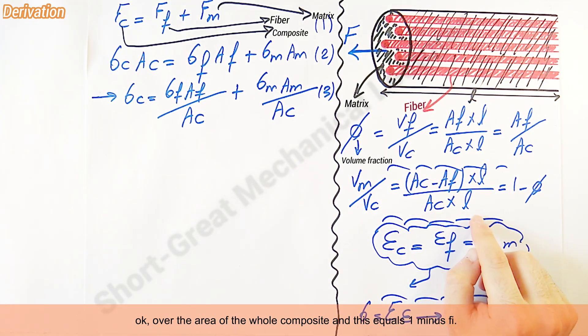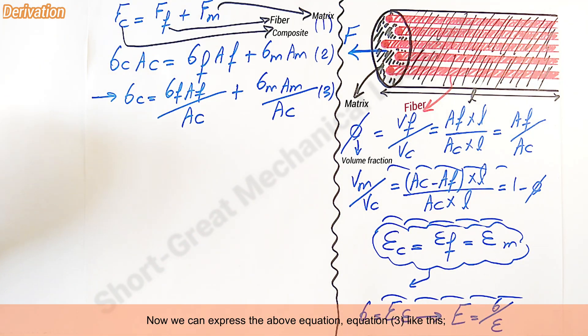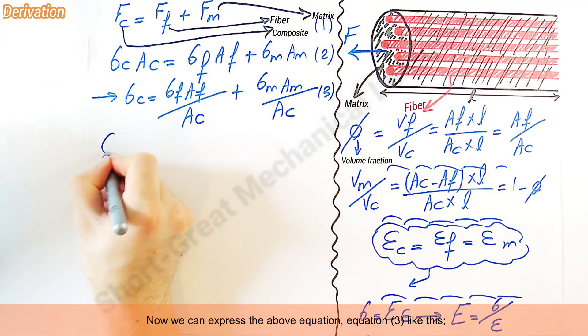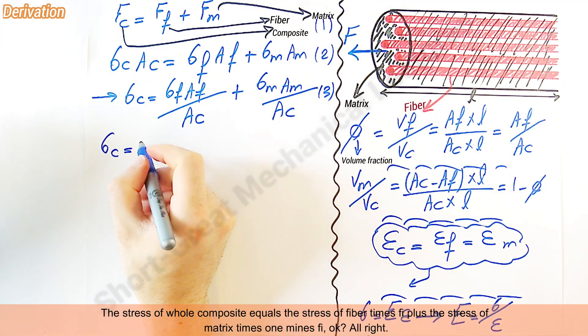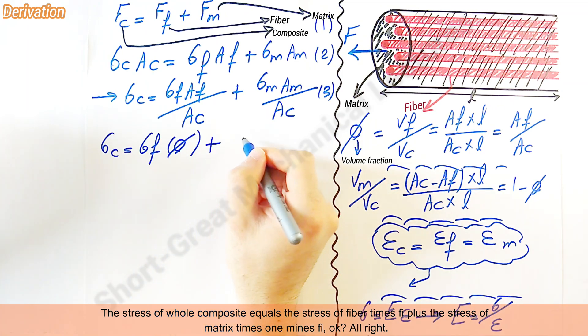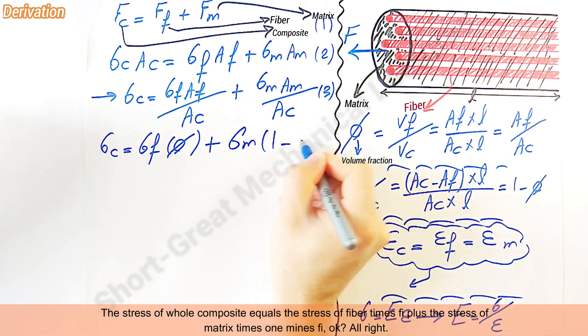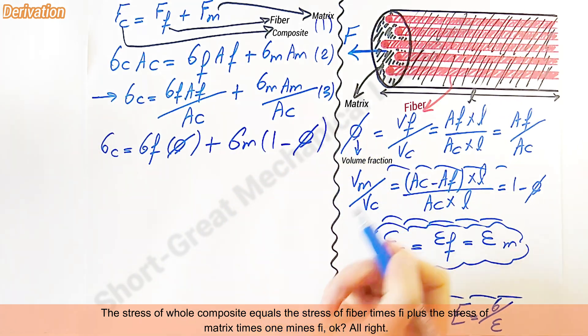Over the area of the whole composite, this equals 1 minus phi. Now, we can express equation 3 like this: The stress of whole composite equals the stress of fiber times phi plus the stress of matrix times 1 minus phi.